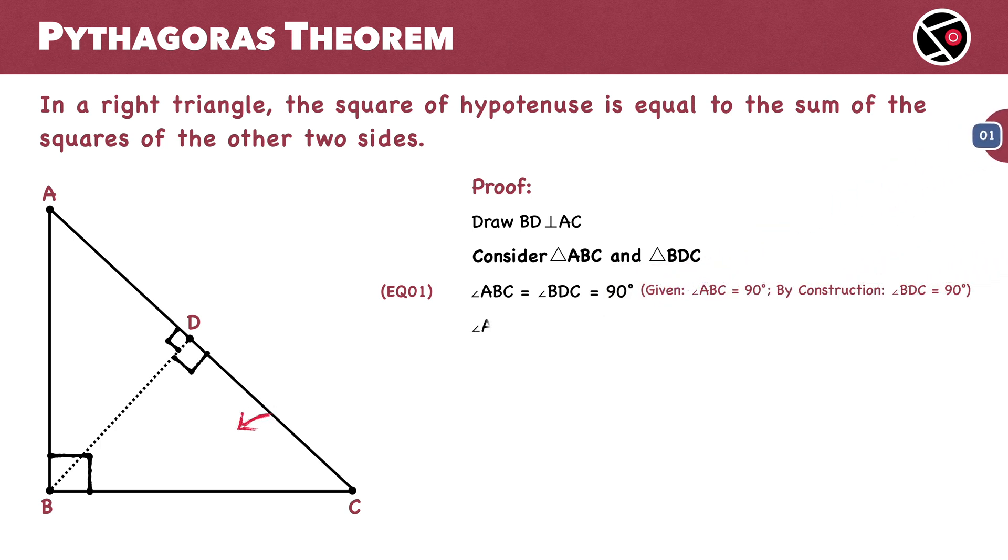Angle ACB equals angle BCD. This angle is common to both triangles. This is equation 2. With two pairs of equal corresponding angles, by the AA criterion for similarity, triangle ABC is similar to triangle BDC.